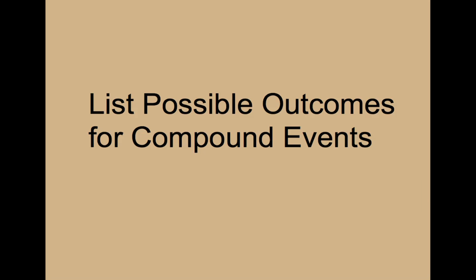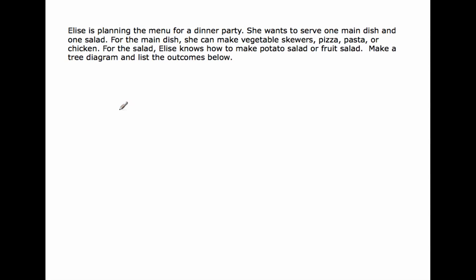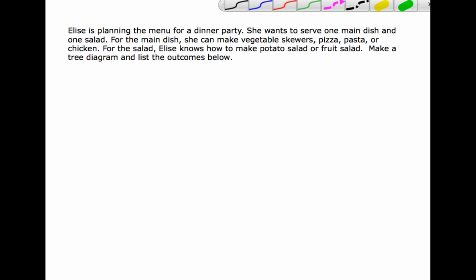Let us move forward and talk about how we're going to do this. The question asks us: Elise is planning the menu for a dinner party, and she wants to serve one main dish and one salad. For the main dish, she can make vegetable skewers, pizza, pasta, or chicken. For the salad, Elise knows how to make potato salad or fruit salad. Make a tree diagram and list the possible outcomes below. This is a classic example of a question about listing possible outcomes for compound events.